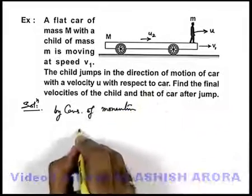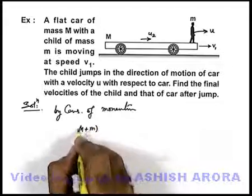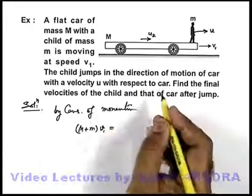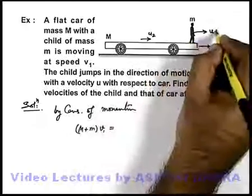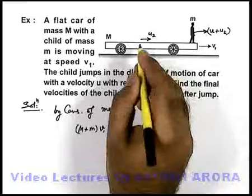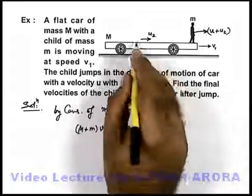Initial momentum of system was capital M plus small m into v1, must be equal to the final momentum. Final momentum, that of the boy would be u plus u2 because we have taken here u2 is the final speed of car after jump.